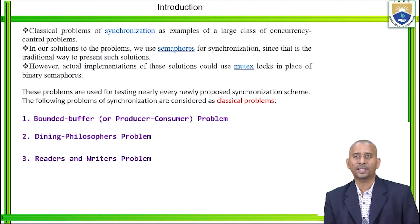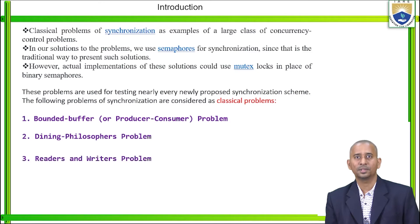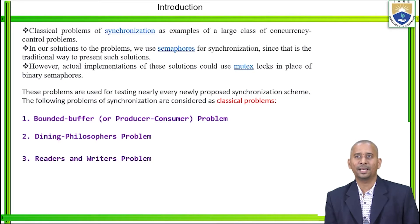The actual implementations of these solutions could use mutex locks in place of binary semaphores. We have two categories of semaphores: counting semaphores and binary semaphores. These problems are used for testing nearly every newly proposed synchronization scheme.